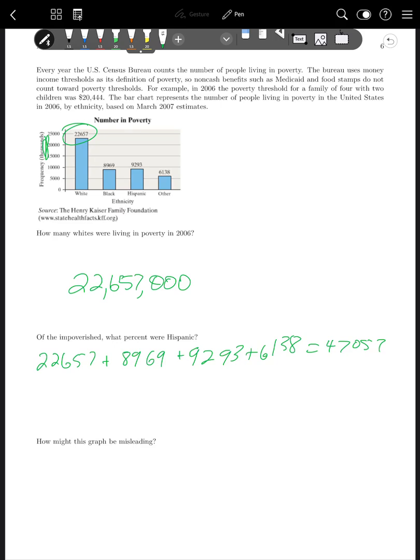That's 47,057. We take the number that are Hispanic, which is 9,293, divided by 47,057, times 100%, which is about 19.7%. How might this graph be misleading? There's a lot of different possible answers to that, but I think the one they're looking for is the fact that we don't know percentage of the population for these groups as a whole. In this case, total numbers is probably not that useful. What might be more useful would be number of impoverished people per 100,000 in the population or something like that, where we get a truer percentage in each group.